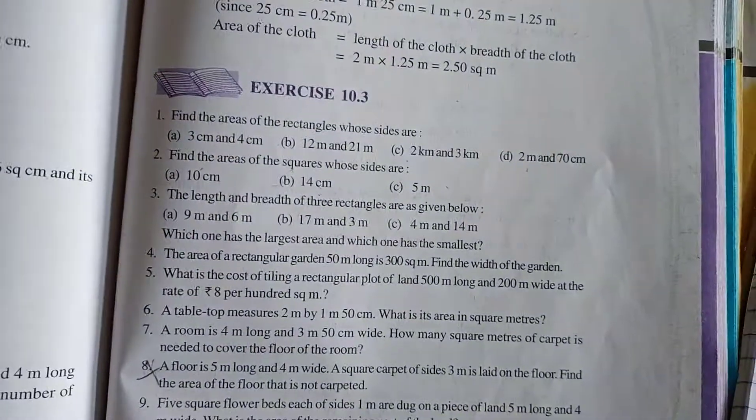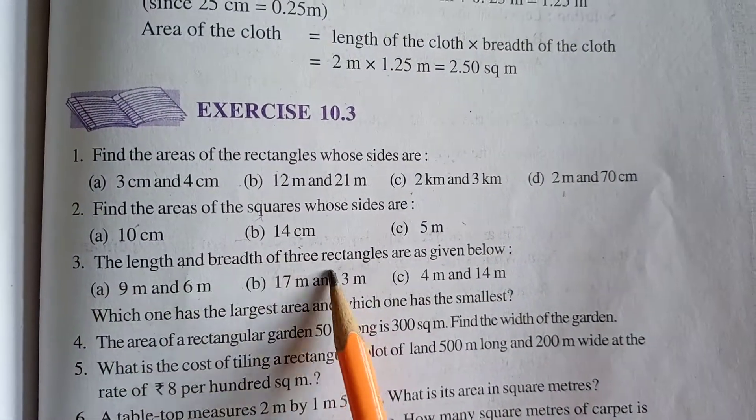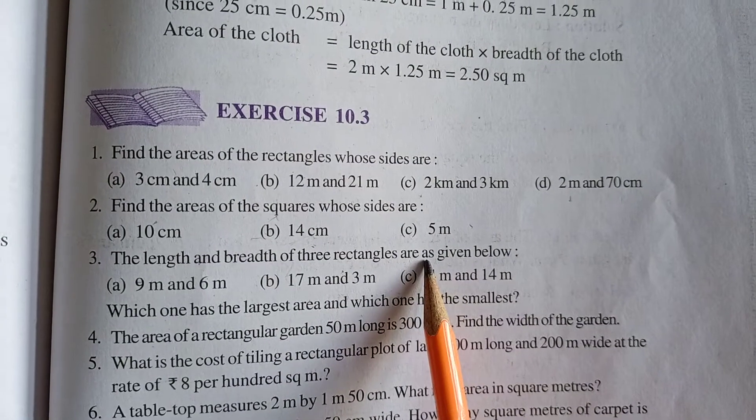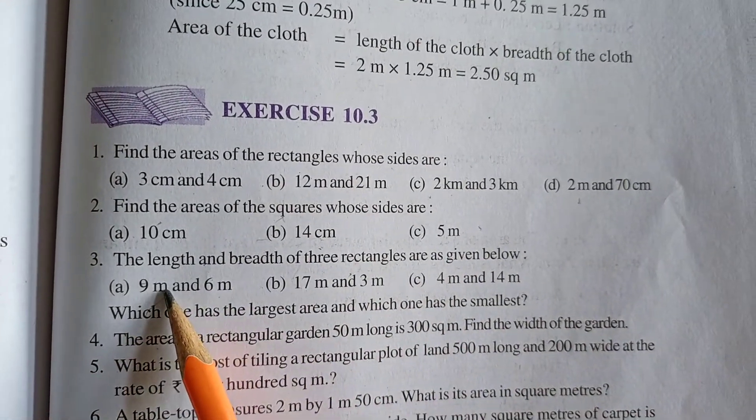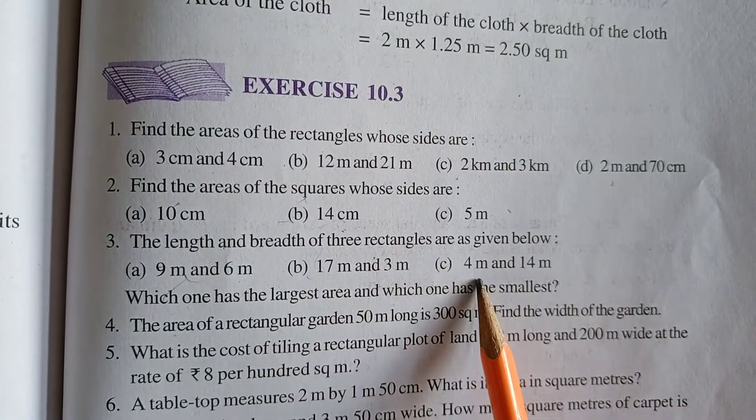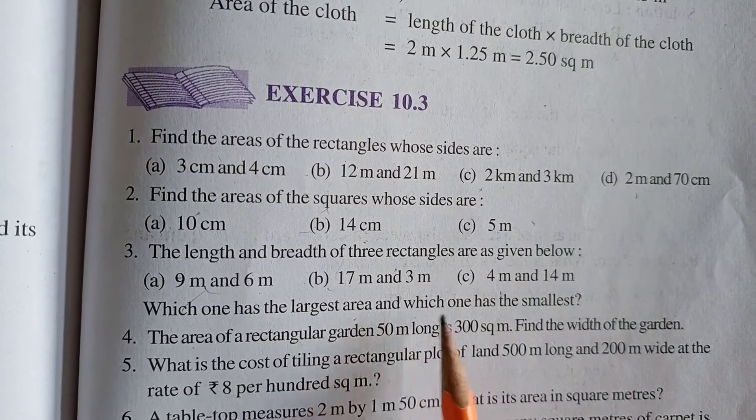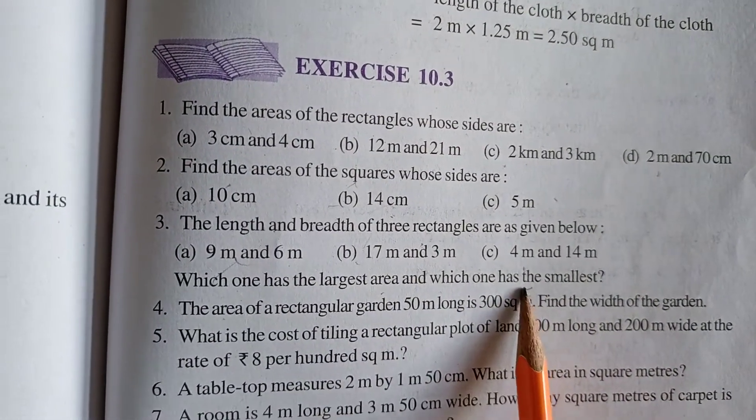Let's move ahead with question number 3 now. What question 3 is saying: The length and breadth of 3 rectangles are as given. Part A: 9 meter by 6 meter. Part B: 17 by 3 meter. Part C: 4 meter by 14 meter. Which one has the largest area and which one has the smallest area.